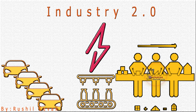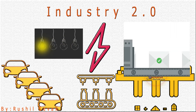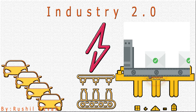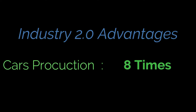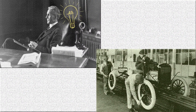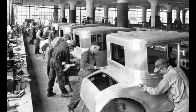The Second Industrial Revolution began in the 19th century through the discovery of electricity and assembly line production. By implementing this revolution, the production of cars increased by 8 times. Henry Ford took the idea of mass production and carried out this principle into the automobile industries.